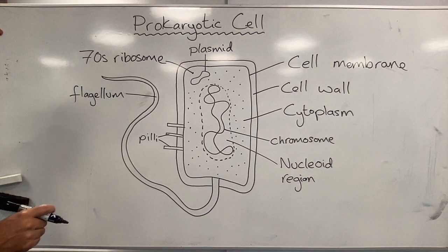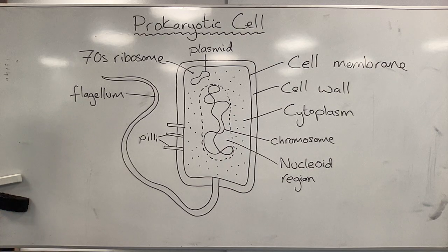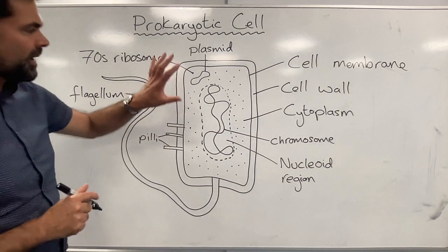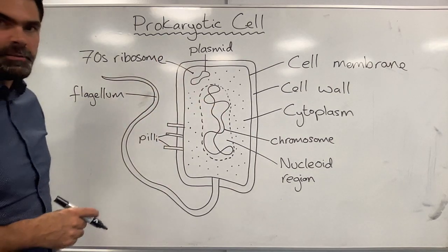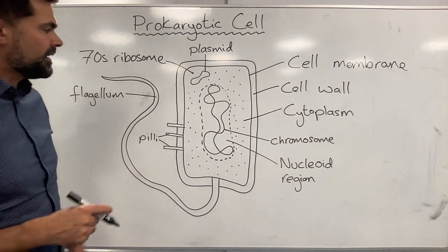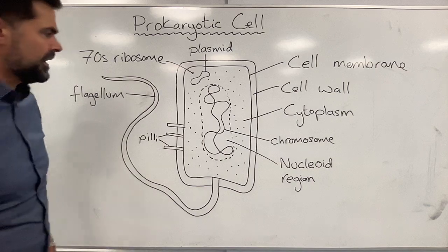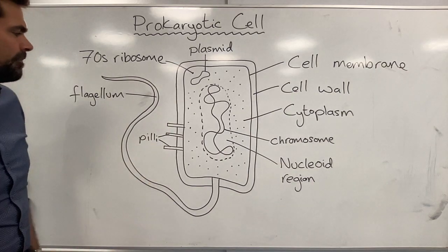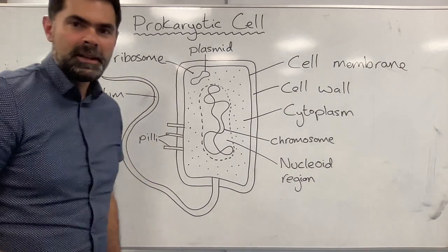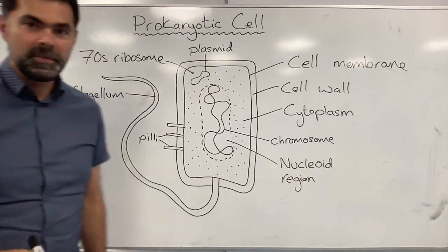So that's everything you need in terms of drawing a prokaryotic cell. Again, this is a bacterial cell as an example of a prokaryotic cell. Even bacteria can come in many different shapes and sizes, but this is just a simple one. Thank you.